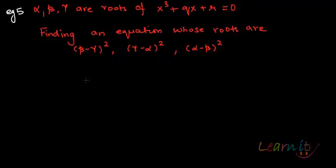This time around we have a simpler equation x³ plus qx plus r equals to 0 and we need to find out an equation whose roots are (β-γ)², (γ-α)², (α-β)². Now, how to go about it?